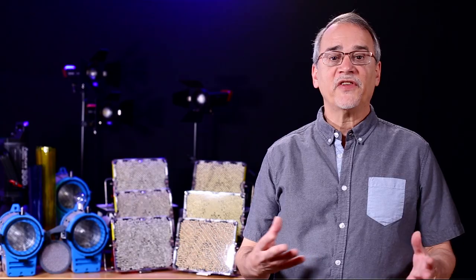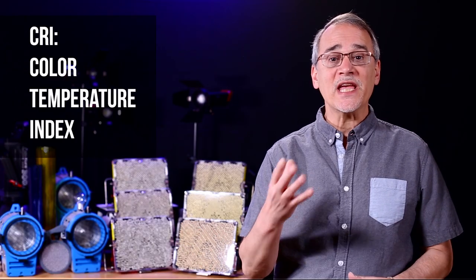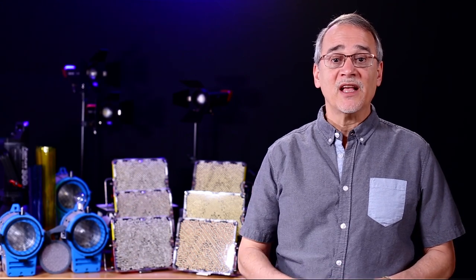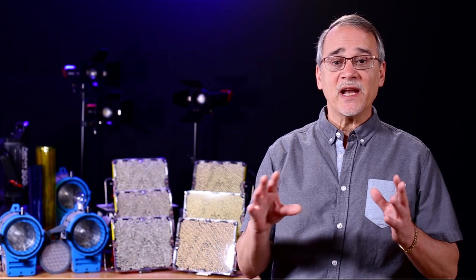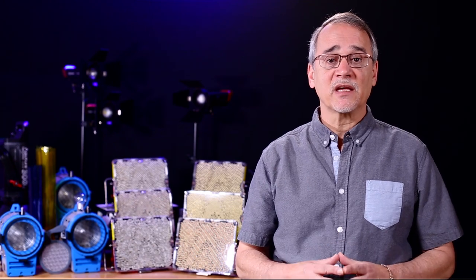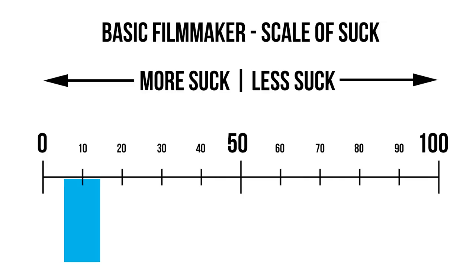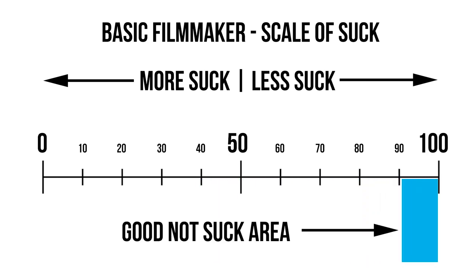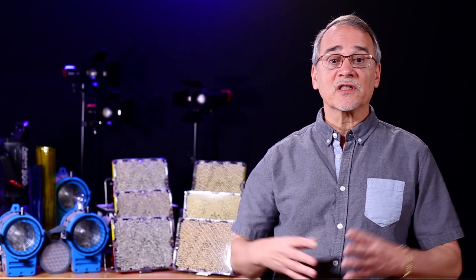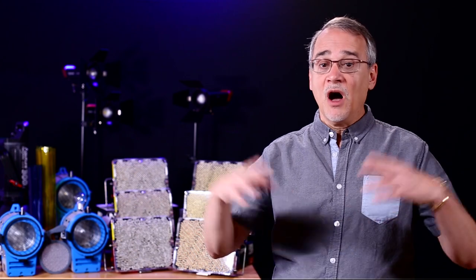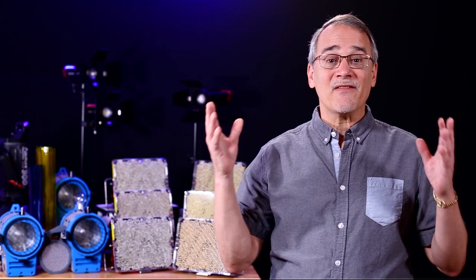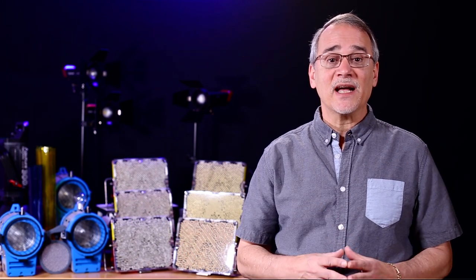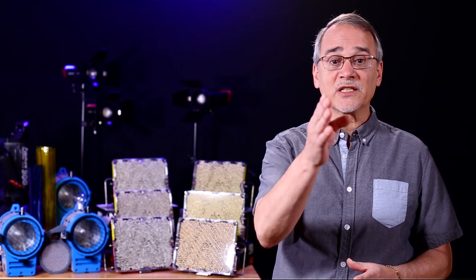CRI stands for Color Rendering Index and runs from 0 to 100. This is a scale to tell you how good the color — the K value — of the light actually is. Basically, any light with a CRI over 90 is good, meaning it's going to be pretty close to the K value specified. When you go under 90, or 80, or 70, you're taking your chances. If you have three lights in the room and the color temperature is all over the map, you're going to have a heck of a time making your lighting match and setting the proper white balance.